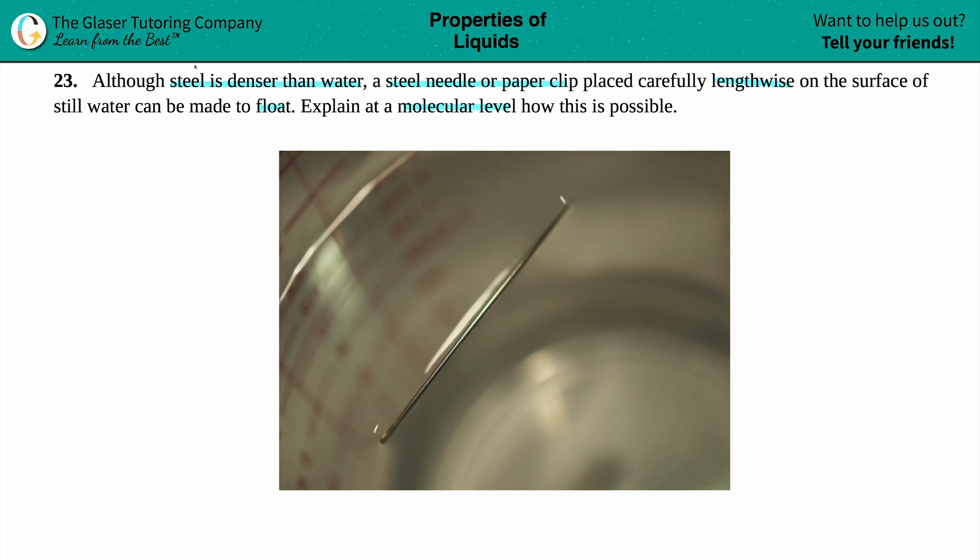And technically, they said that steel is denser than water. And remember, denser materials will sink. So generally, this steel needle should have sunk all the way to the bottom because it's denser than water. But if you place it lengthwise, you will be able to have that needle float. And what's going on here?